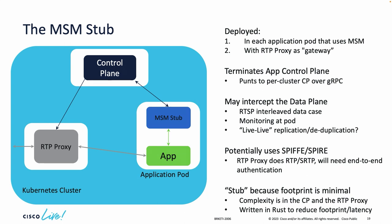The stub mostly handles how we separate the control plane from individual workloads, really to handle failovers. We don't want to do things like mirror TCP session state, because that's really hard. By moving everything onto gRPC at the stub, we get away from that. We can also intercept the data plane if we want for some use cases and add authentication. This is really low footprint — less than a thousand lines of code, so pretty small.